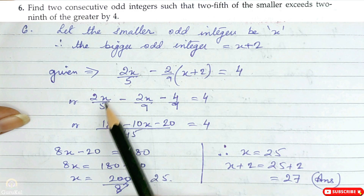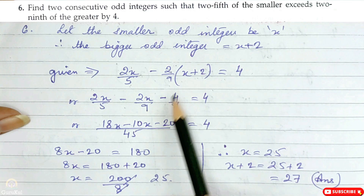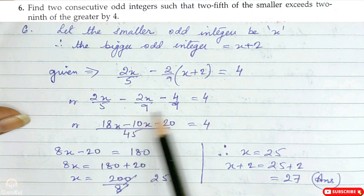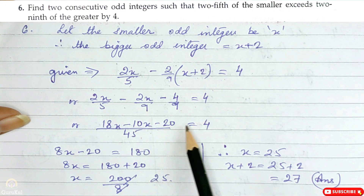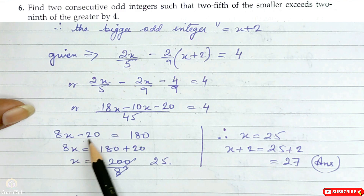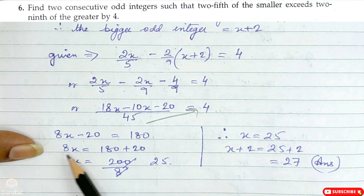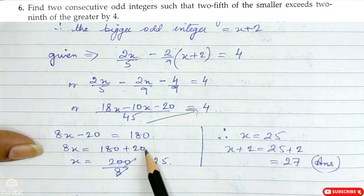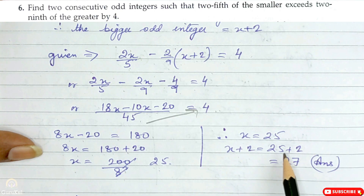Solving: 2x/5 minus (2x/9 minus 4/9) is equal to 4. Taking LCM which is 45: 18x minus 10x minus 20 is equal to 180 (i.e., 45 × 4). So 8x minus 20 is equal to 180; therefore 8x is equal to 200, and x is equal to 200/8 which is 25. The bigger odd integer is x plus 2 = 27.